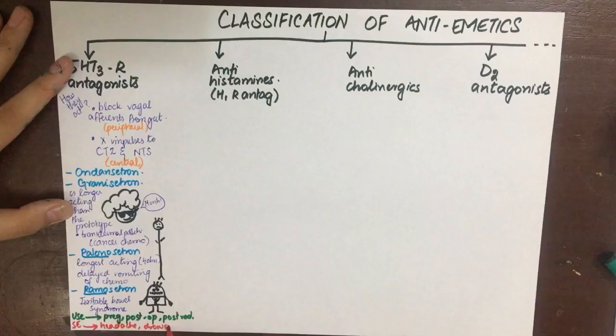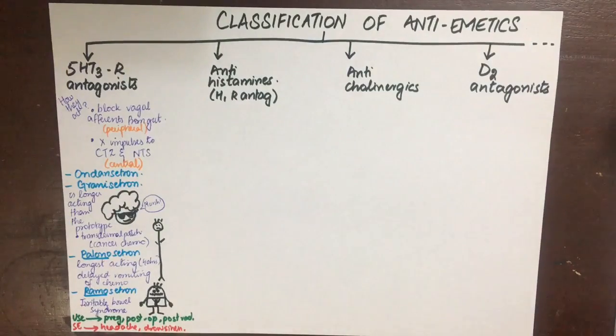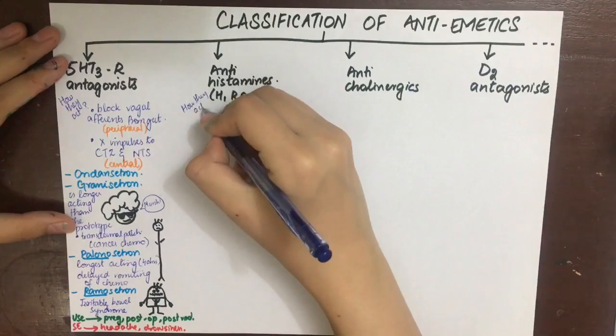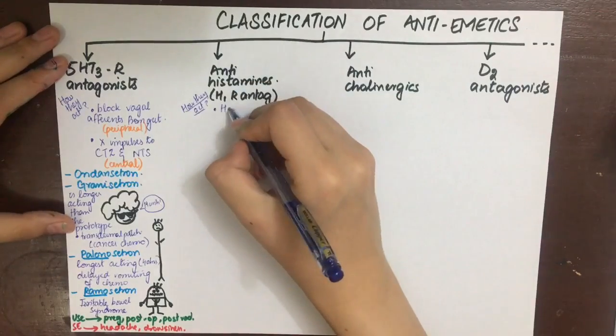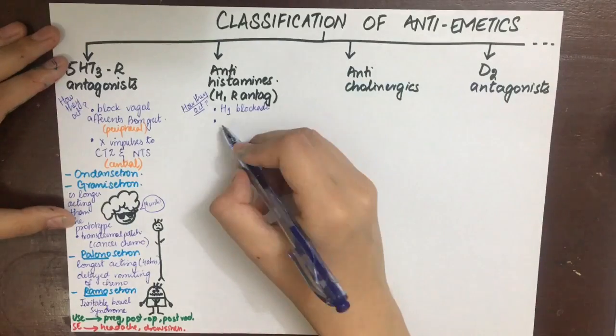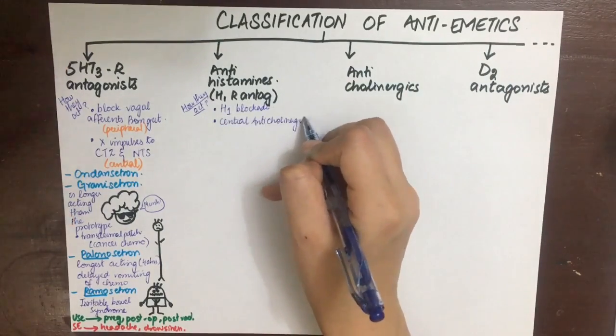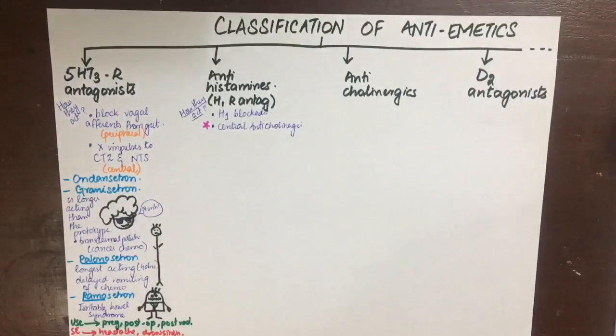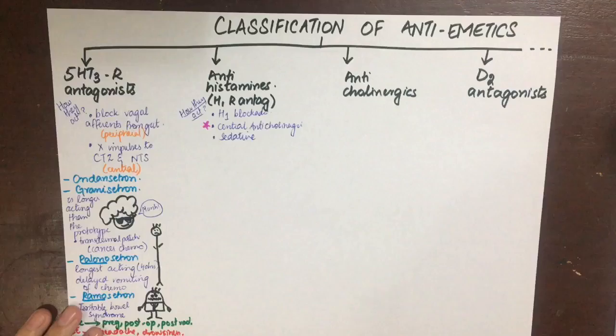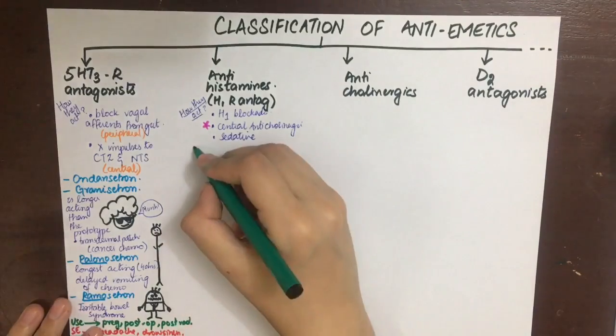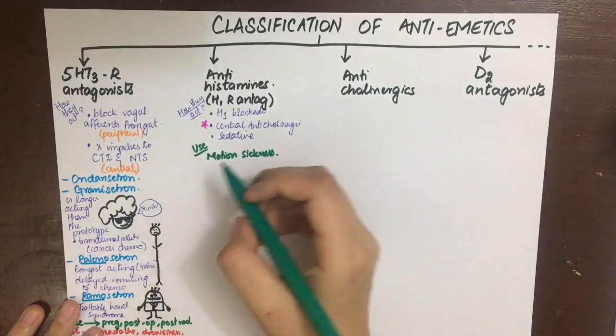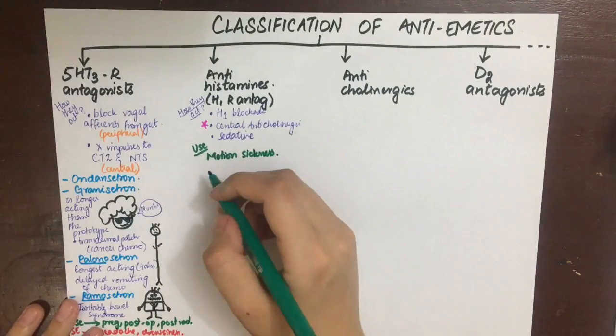Now let's look at the antihistamines or H1 antagonists. They block the H1 receptors on the vestibular apparatus and also directly on the vomiting center. They also have central anticholinergic activity—that is, they block the M1 receptors on the vestibular apparatus and also on the vomiting center. They also have a sedative action.